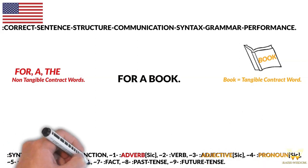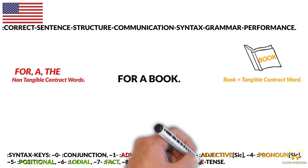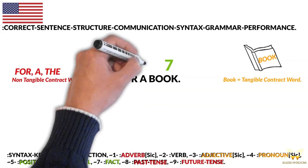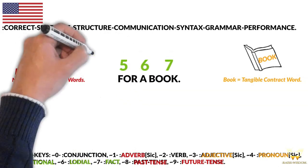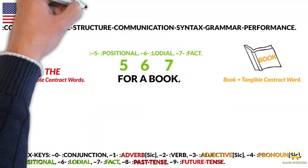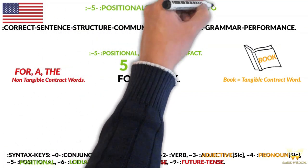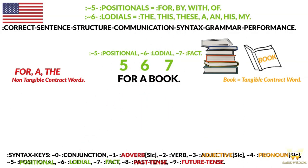I've given some syntax values on this dry-erase board for you. This is how I would syntax it: Position Lodial Fact. We bank the values of five and six for these non-tangible contract words because we give closure to their function within this construct. And then 'book' is a fact — it is a seven in this construct.